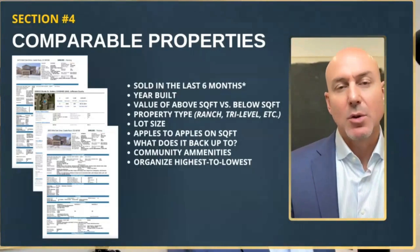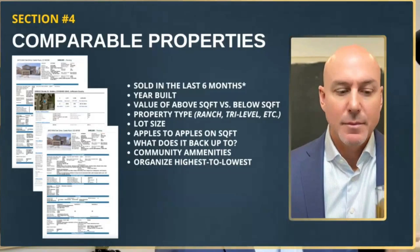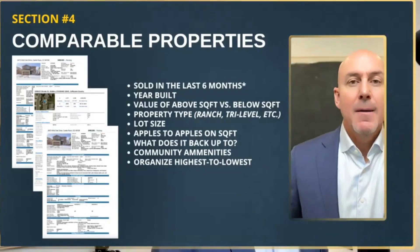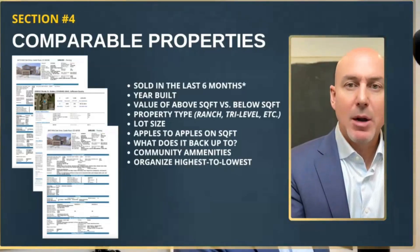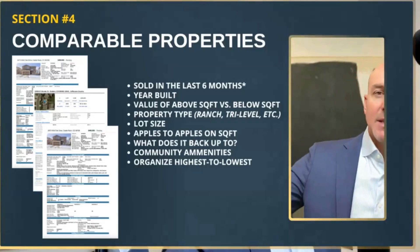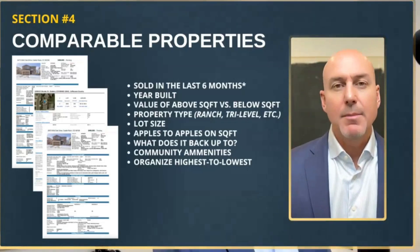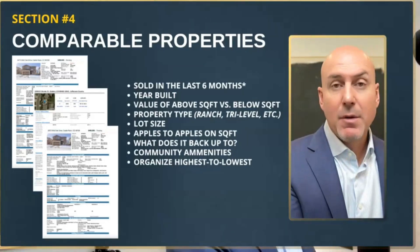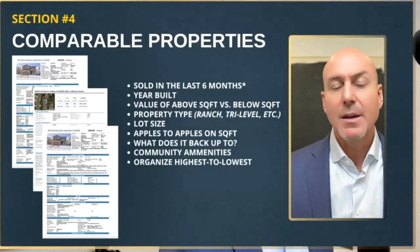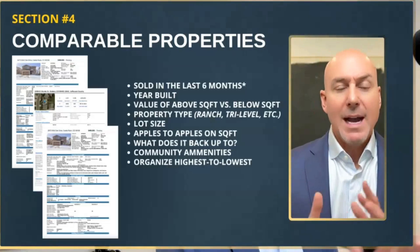Why six months? Because that's what an appraiser would use. If the home is going to be financed, they cannot utilize a comparable from anything further back than six months. Sometimes sellers will say, 'But this home down the street sold a year ago for X — why aren't you using that?' I'll still look at it, keep it in my back pocket, but explain to them: that was a different market, interest rates have changed, and an appraiser would not be able to utilize it for financing either.